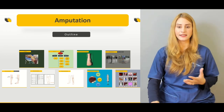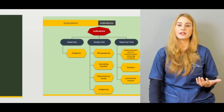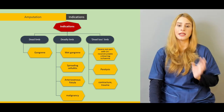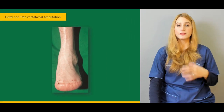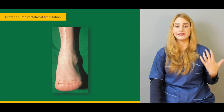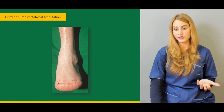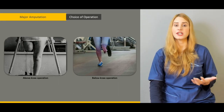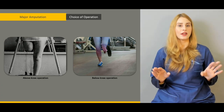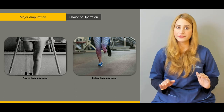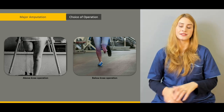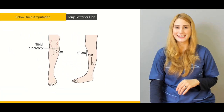Precisely, we'll cover almost all the indications — dead limb, deadly limb, dead loss limb. We'll talk about foot amputations, distal and transmetatarsal amputations, their indications, procedures, and how they are performed. For major operations, the choices include above-knee amputations, below-knee amputations, and through-knee amputations, which we'll discuss in detail.